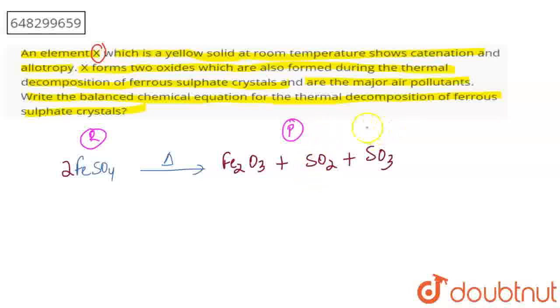This is your sulfur, right? This is your X element. Because you have made your SO2 and SO3 oxides, and these are your major air pollutants. And the sulfur also shows your catenation property and allotropy.